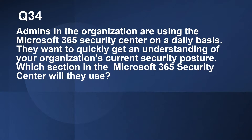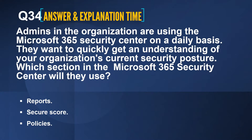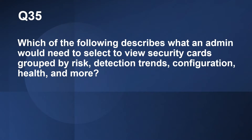Question number 34: Admins in the organization are using the Microsoft 365 Security Center on a daily basis. They want to quickly get an understanding of the organization's current security posture. Which section in the Microsoft 365 Security Center will they use? The options are: Reports, Secure Score, Policies. The correct answer is Secure Score. Secure Score in the Microsoft 365 Security Center will give you a snapshot of your organization's security posture and provide you with details on how to improve it.